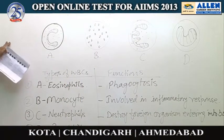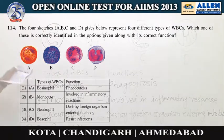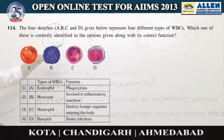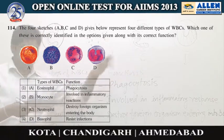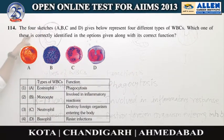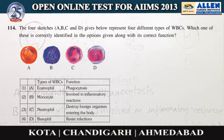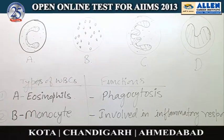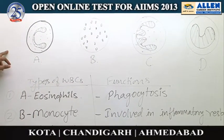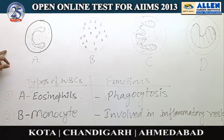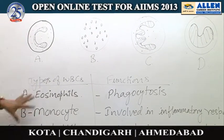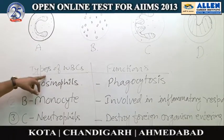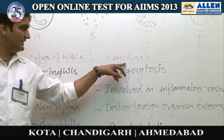Let's move on to question number 114. The question is: the four sketches A, B, C, and D given below represent different types of WBCs. There are five kinds of WBCs, but here only four kinds are given. Which one of these is correctly identified in the option given along with its correct function? In the options there are two columns: type of WBC and its function.